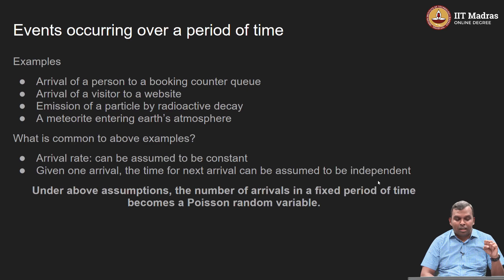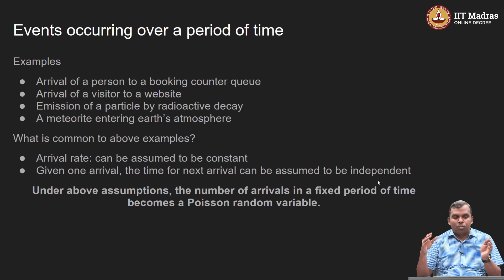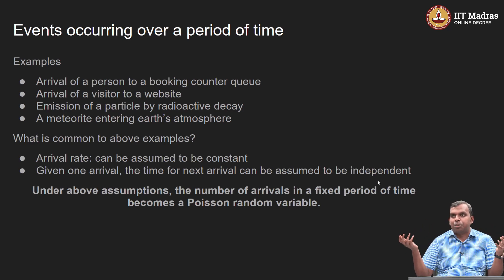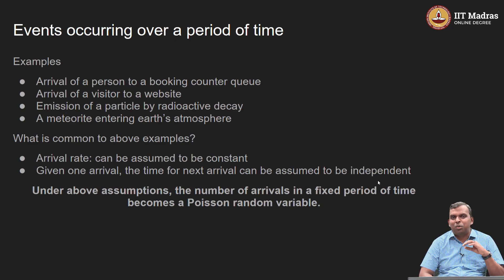In many of these examples, a couple of things are in common. These are two very crucial conditions that are quite often satisfied. One is that you can assume a certain arrival rate. Maybe that arrival rate will vary over time — at some times it may be larger, at other times smaller — but generally over large periods of time, you may be able to assume the arrival rate is fixed. For instance, for meteorites entering the earth's atmosphere, it is okay to assume the number of meteorites per unit of time is roughly constant. Same with radioactive decay — there is an average emission rate. For people coming into a queue, maybe over a long enough period of time, you can assume the arrival rate is fixed.